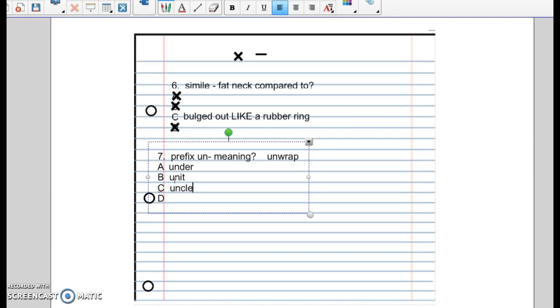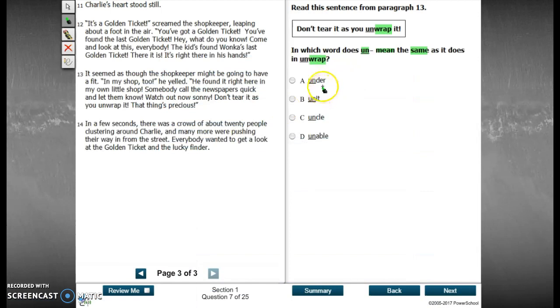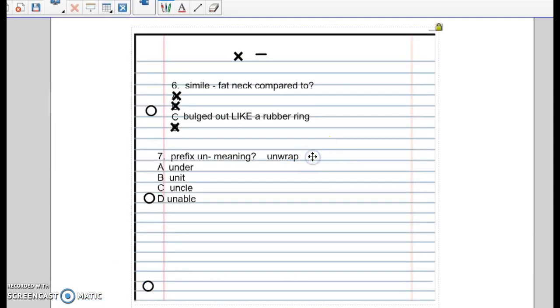Uncle. And unable. All right, so taking a look at it. Very simple. The strategy is figure out what does it mean and then plug in the meaning. Okay? On each choice.